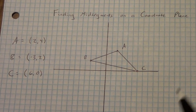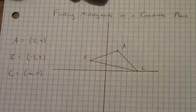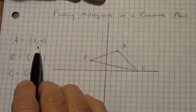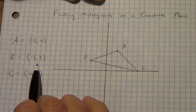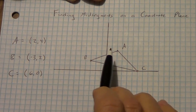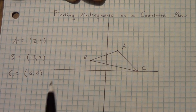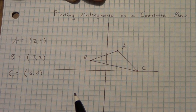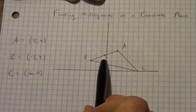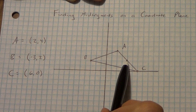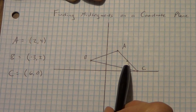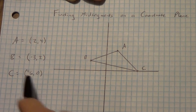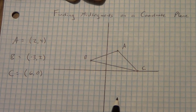Today we're going to work on finding mid-segments on a coordinate plane. I already have this triangle graphed. These are our points: A equals (2, 4), B equals (-3, 2), and C equals (6, 0). We're going to find the mid-segments. A mid-segment goes from the midpoint on one side of a triangle to the midpoint on the second side, so we need to find the midpoints using our midpoint formula. If you need to pause the video to get these points written down and get this triangle graphed, go ahead and do that now.